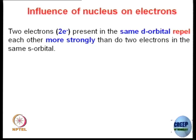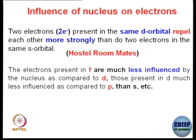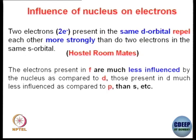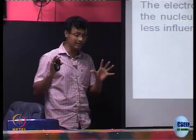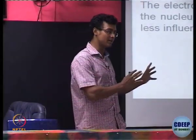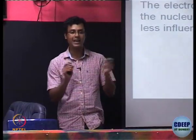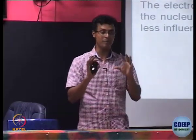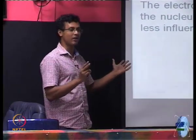Two electrons in a d orbital will repel each other more strongly compared to two electrons in an s orbital, because the s orbital is more engaged with the nucleus — just like the hostile roommate analogy. The electrons present in f orbitals are obviously much less influenced by the nucleus compared to d. So: s orbital electrons are most involved with the nucleus, p is a little less, d is further less, and f electrons are the least involved. Therefore, repulsion among f electrons will be much greater compared to any two electrons in any other orbital.